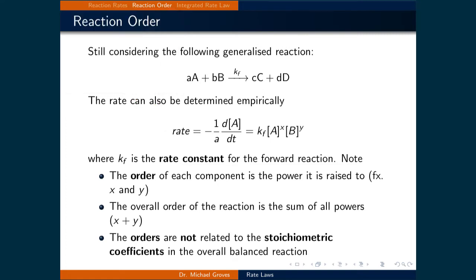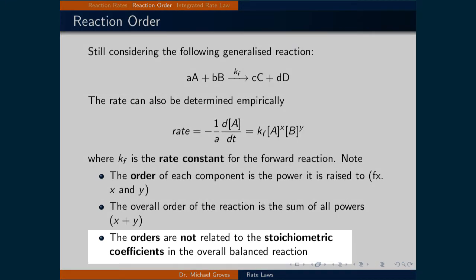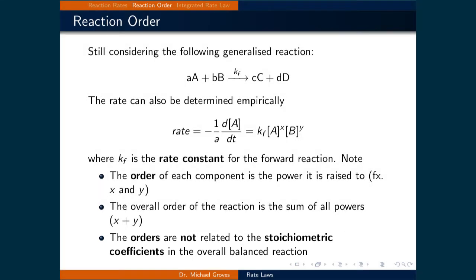This is an important point: the orders are not related to the stoichiometric coefficients in the balanced equation. Keep in mind that there may be many reaction steps the reaction takes to go from reactants to products. Some steps are faster than others; the slow steps will dictate the overall rate, and it may not be captured in the overall rate law expression. Predicting the order based on stoichiometric coefficients is generally problematic. Rate laws are empirical relationships, and so the orders must be verified empirically.